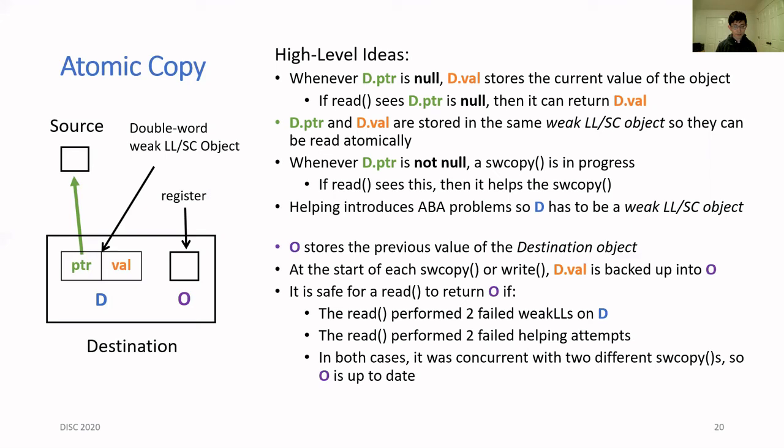Normally it's not safe for the read operation to just directly return O because it could be out of date. However, it's possible in two special occasions. The first one is if the read operation fails two different weak LLs, then we can show that these two weak LLs were interrupted by different single-writer copy operations and the value of O is updated in between these two, meaning that it's safe to return for the read operation. A similar case happens if the read operation attempts helping twice and then fails in both attempts.